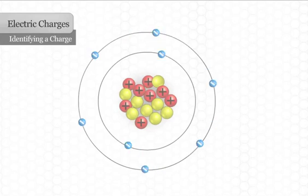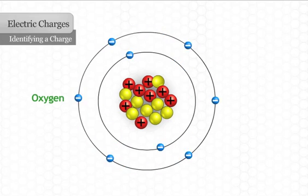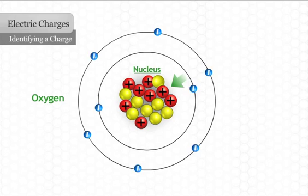In every atom of an element, the protons and neutrons cluster together in the center of the atom. This collection of protons and neutrons is called the nucleus of an atom.